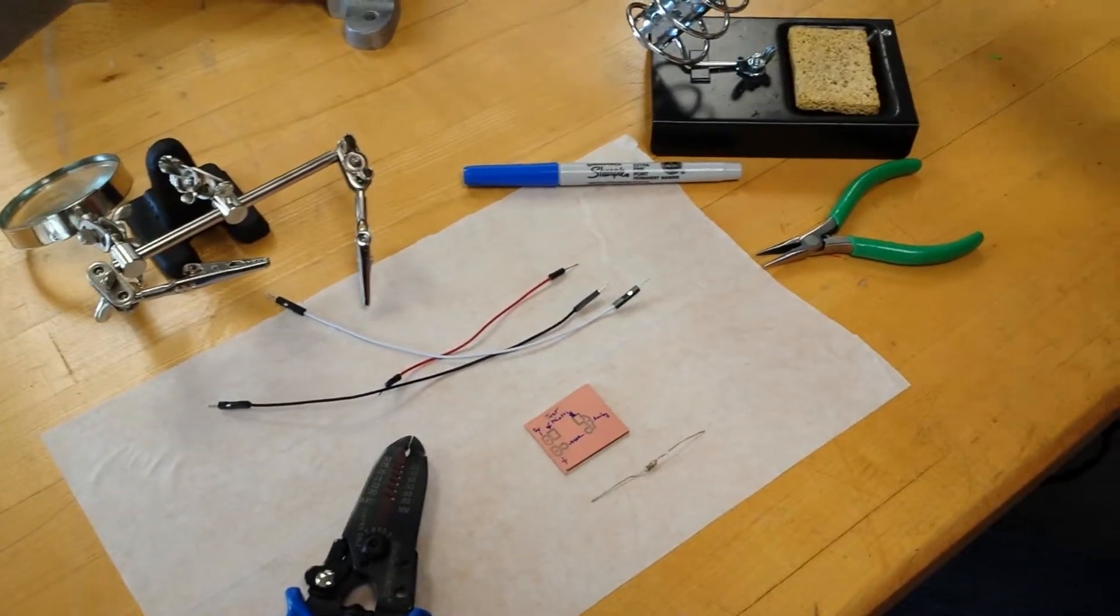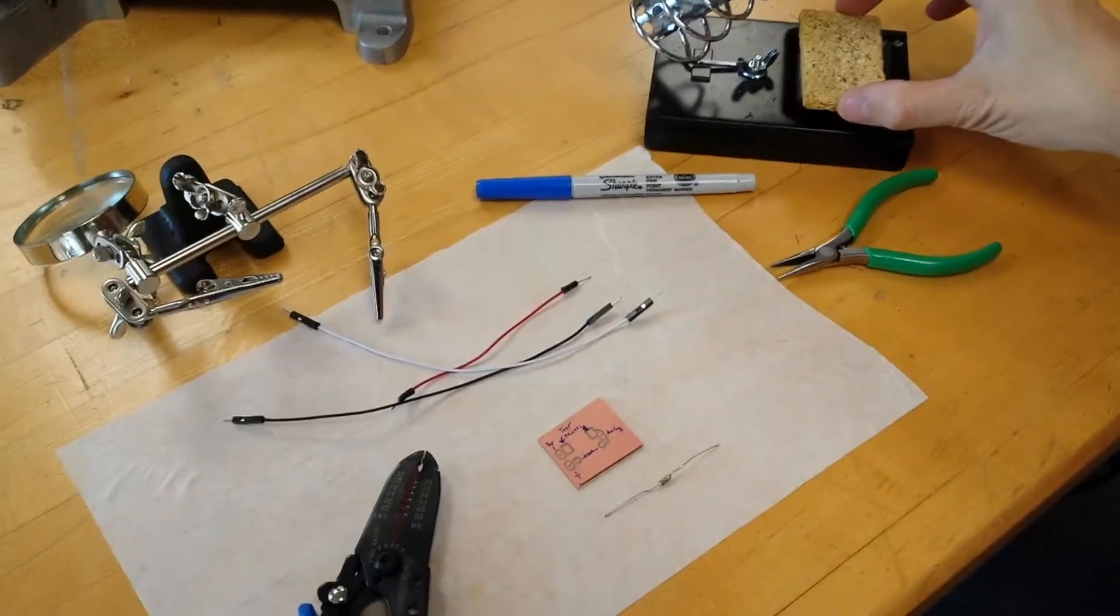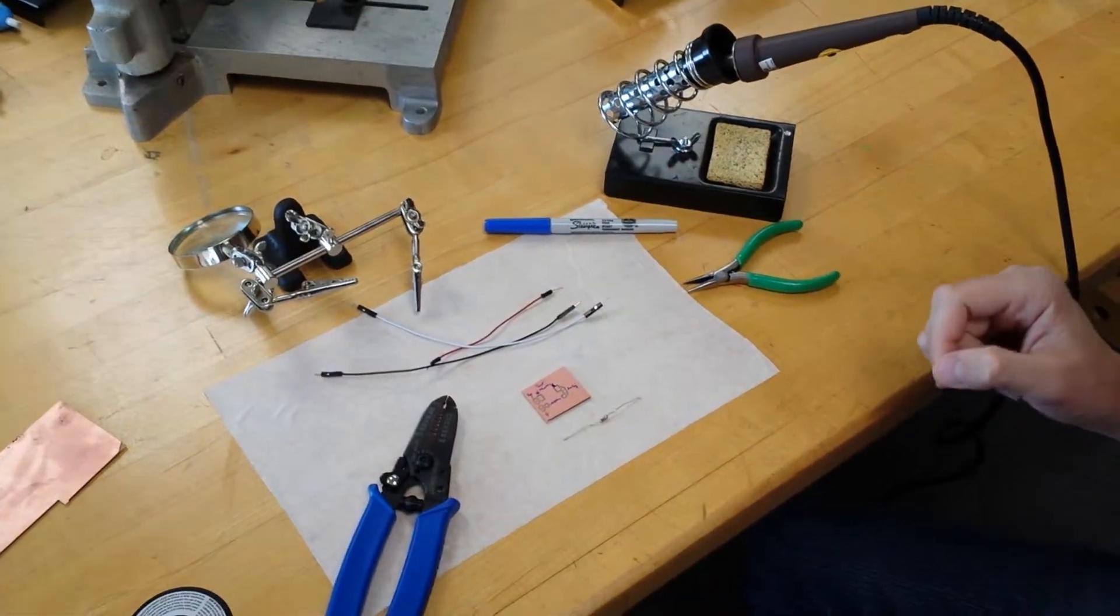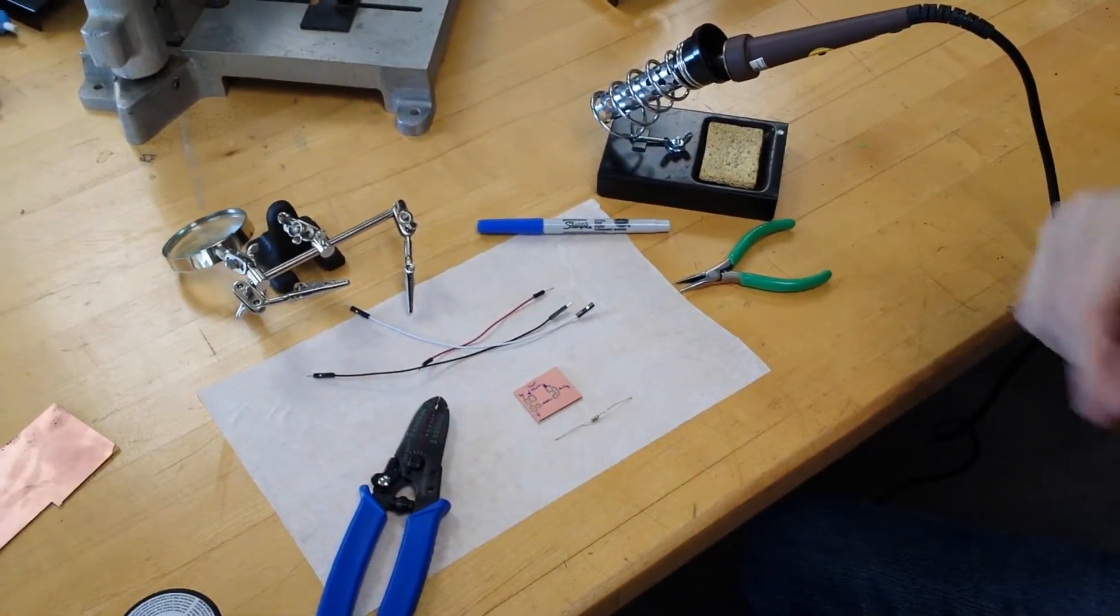You'll need a soldering iron. You want to moisten the sponge. I haven't here, but that's because I'm not going to really use the sponge. But you want to use the sponge to get off any excess solder.